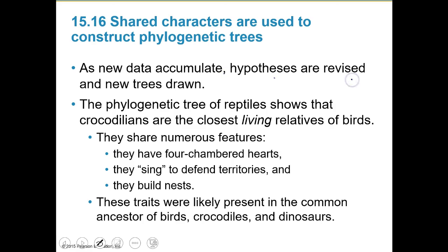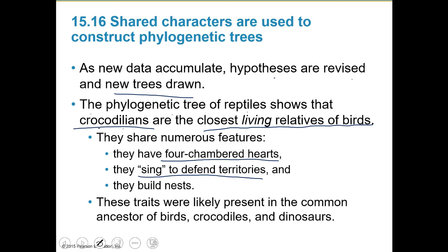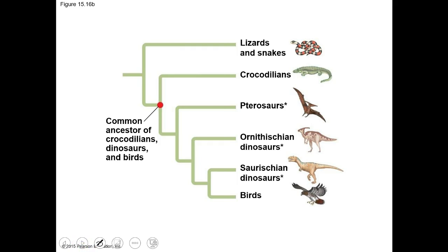As new data accumulate, hypotheses are revised and new trees are drawn - these change constantly. The phylogenetic tree of reptiles shows that crocodilians are the closest living relatives to birds. They share numerous features: four-chambered hearts, they sing to defend their territories, and they build nests. These traits were likely common in the ancestors of birds, crocodiles, and dinosaurs. All of the dinosaur lineages died out, so the closest living relative to the bird would then be the crocodile, based on what we have.